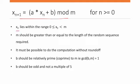For n ≥ 0, X₀ must lie within the range 0 ≤ X₀ < m. X₀ should be greater than or equal to 0 and less than m. It should not be equal to m.